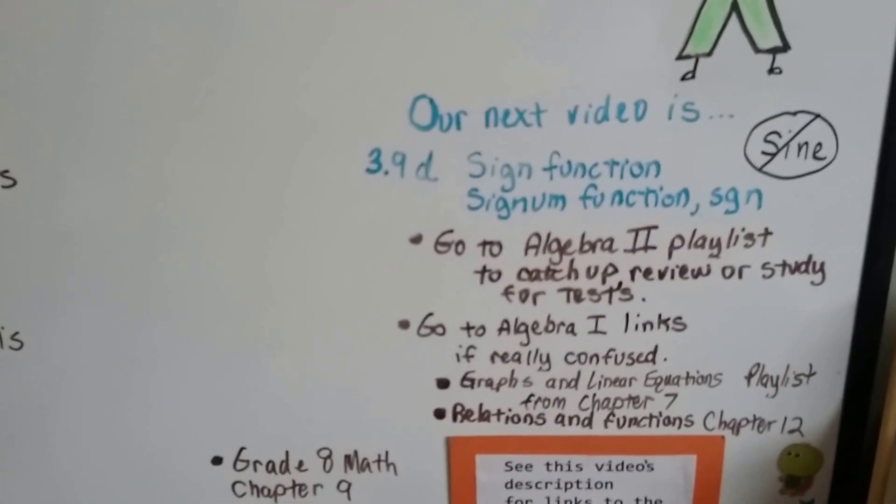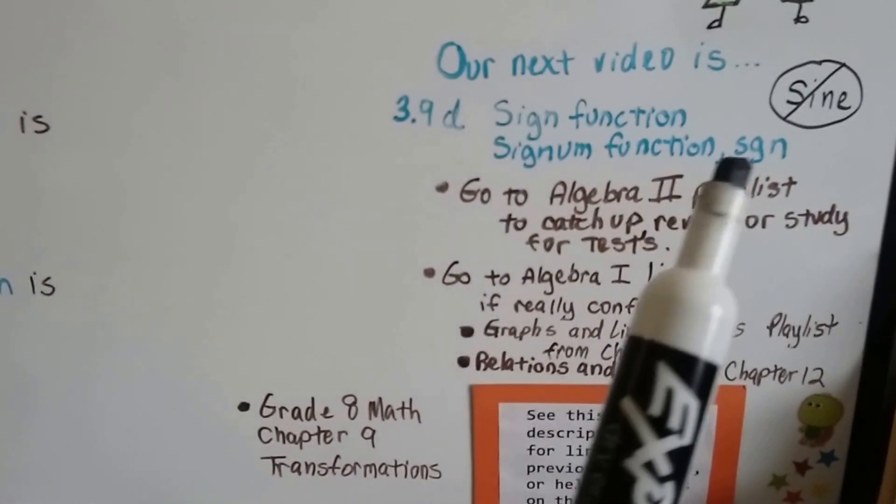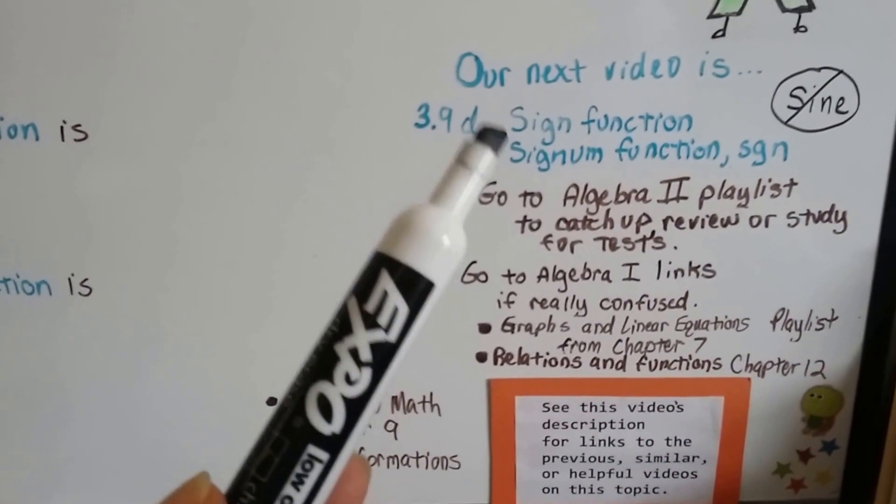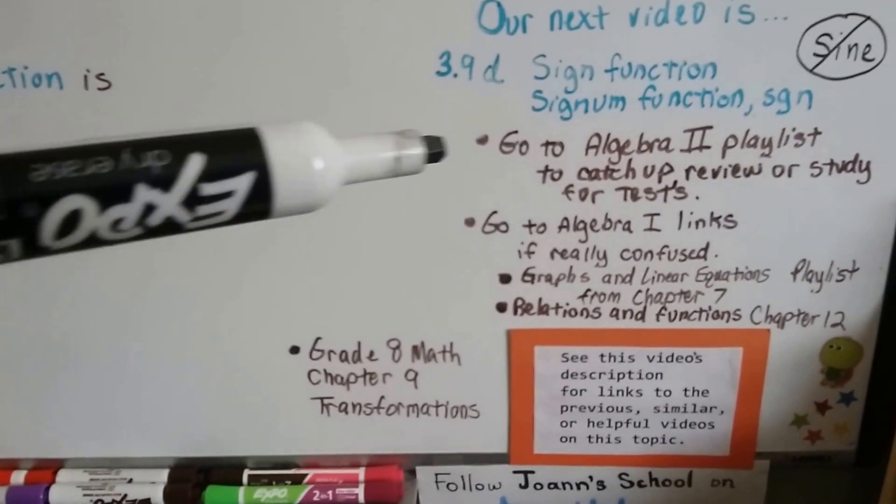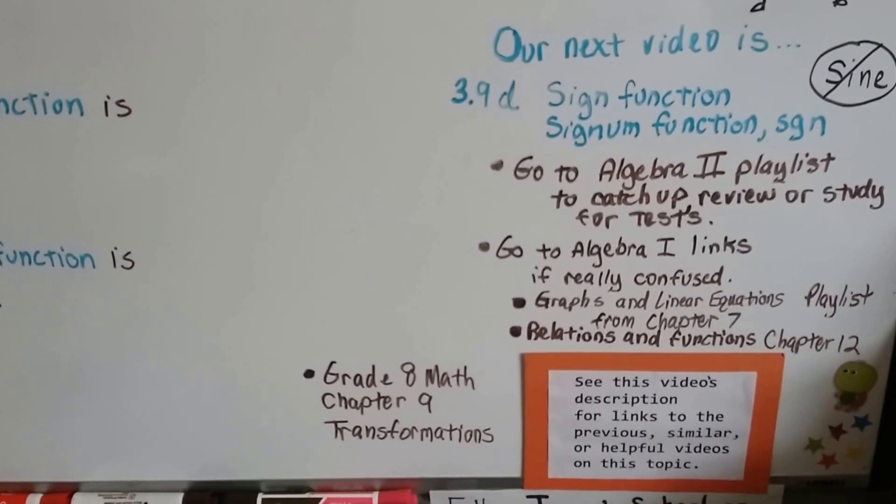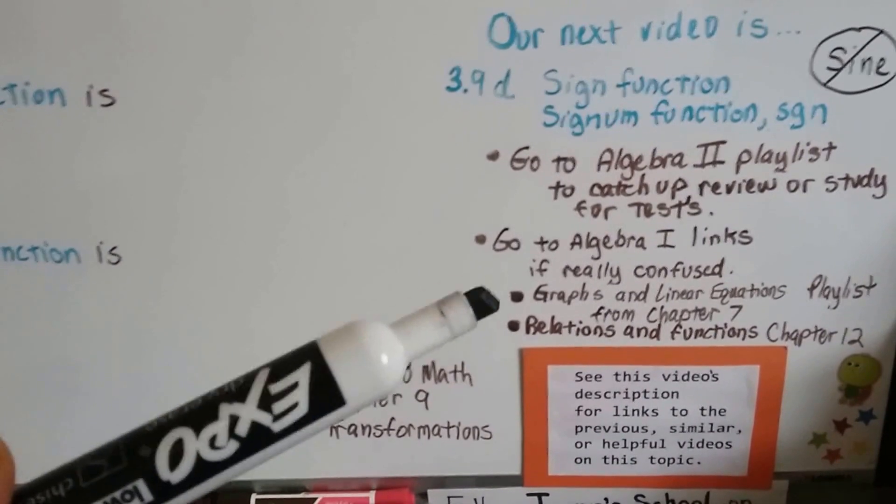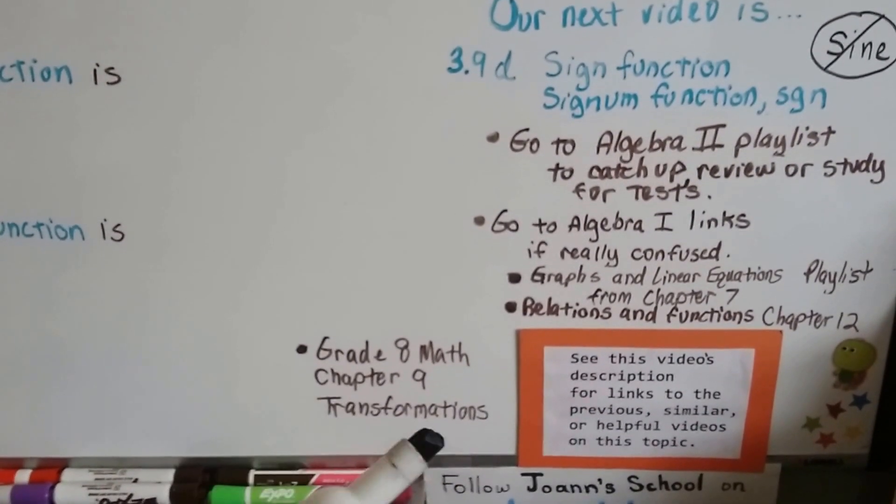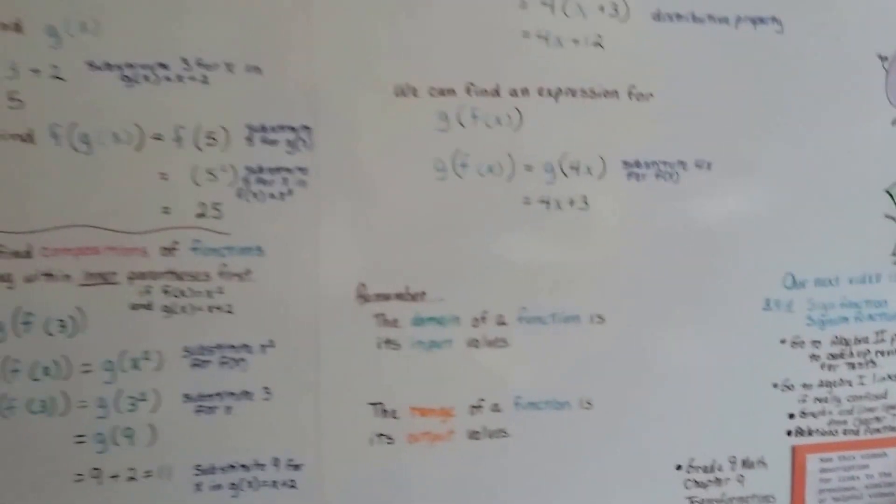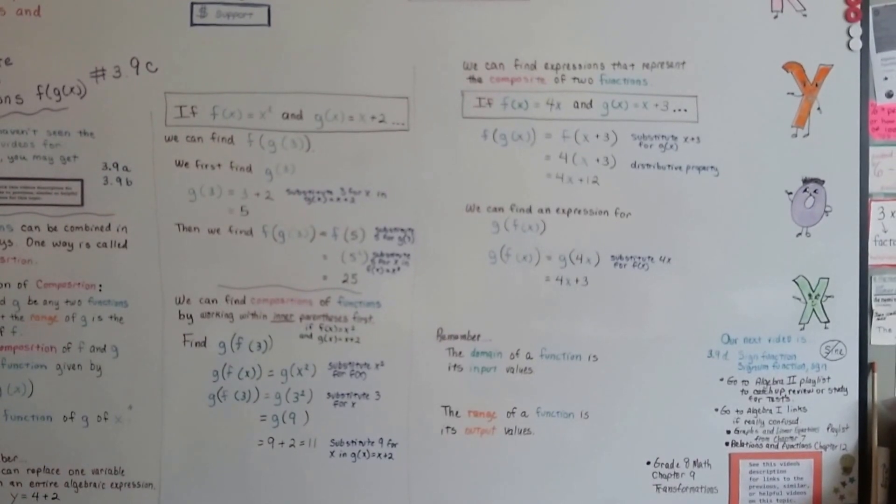Now our next video is 3.9d, and we're going to talk about sine function, which is signum function. Signum is the Latin word for sign. And you might see it just as sgn, like this. Now I'm not talking about sine kind of sign. This is different. This is sine function, signum function. And I'm going to add this video to the Algebra 2 playlist today, and you can use that to catch up or study for tests. And that's going to be in the description of this video. You can just click on these links, and there's going to be links to the Chapter 7 and Chapter 12 playlists from Algebra 1. And there's going to be a link to the Grade 8 Math Chapter 9 on transformations, because we talked about that in the last couple of videos. All you have to do is click on this description, and you can click right onto those links. So let's talk about signum function next. I hope you're having a great day. Keep your chin up, keep trying, and you'll be a math wizard. I'll see you next video. Bye.